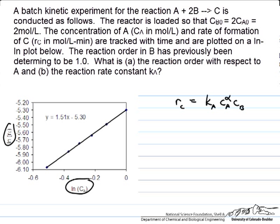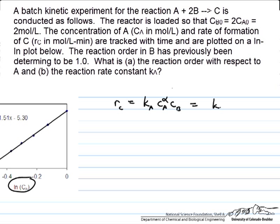One nice thing about this setup is that because the feed is stoichiometric — you always consume two moles of B for every mole of A, and you start with twice as much B as A — you will always have the concentration of B equal to twice the concentration of A. This allows a substitution so that the rate becomes Ka times Ca to the alpha times 2Ca, replacing one unknown with another.